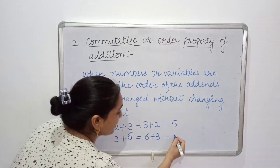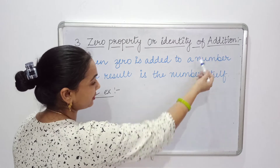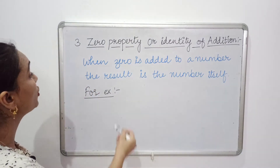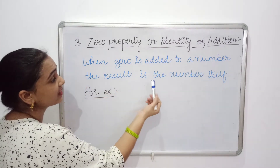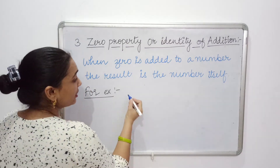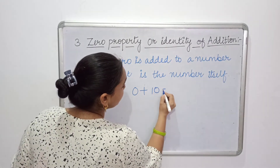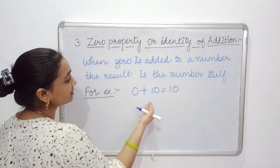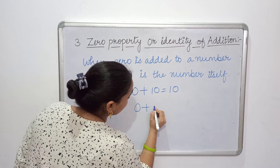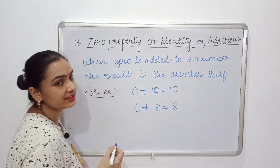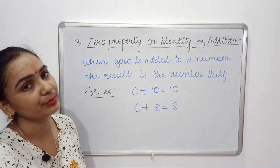The third property is the zero property, or identity of addition. This property states that when 0 is added to a number, the result is the number itself. For example, 0 plus 10 equals 10, and 0 plus 8 equals 8. So if we add 0 to any number, the result is the number itself.